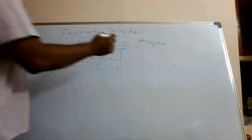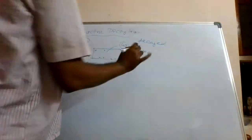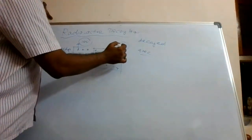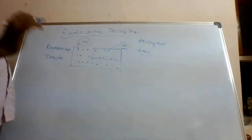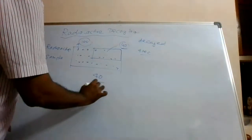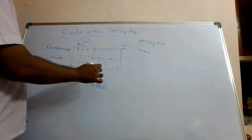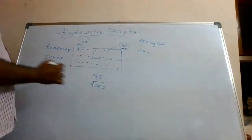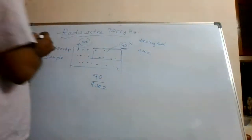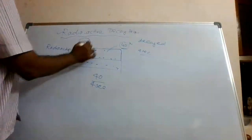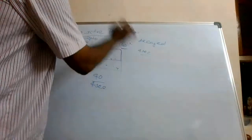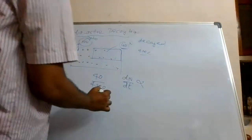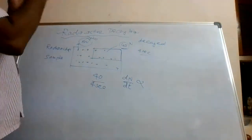For explanation purposes, let us say 40 nuclei are trying to decay in four seconds. That means the rate of decay is 40 decayed in four seconds. So the radioactive decay law says that the rate of decay — some dN decayed from initial sample size N₀ — is proportional to the number of samples present at that time.